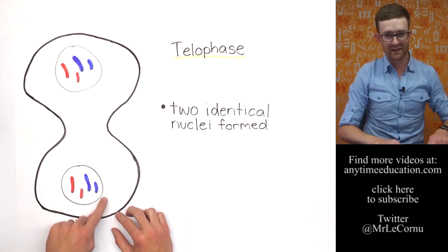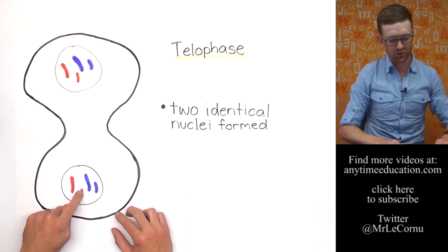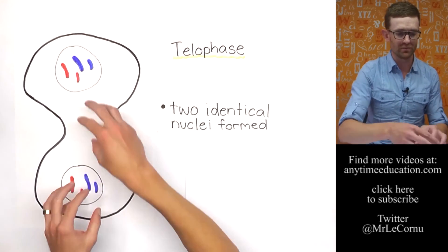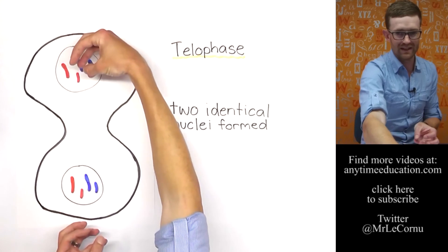And then down here, another nucleus, big red, big blue, little red, little blue. Exactly the same chromosomes, copies of them, which have been brought to opposite ends of the cell.